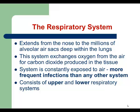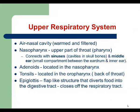The respiratory system is divided into two parts: upper and lower respiratory systems. The upper respiratory system begins from the nasal cavities, where inhaled air gets warmed up and filtered. The next part is the nasopharynx, which is the upper part of the throat, connected to sinuses and the middle ear. Adenoids, which are lymphoid tissue, are located in this area. The nasopharynx continues into the oropharynx, which is the back of the throat, where tonsils are located. The structure that divides the upper from the lower respiratory system is called the epiglottis.